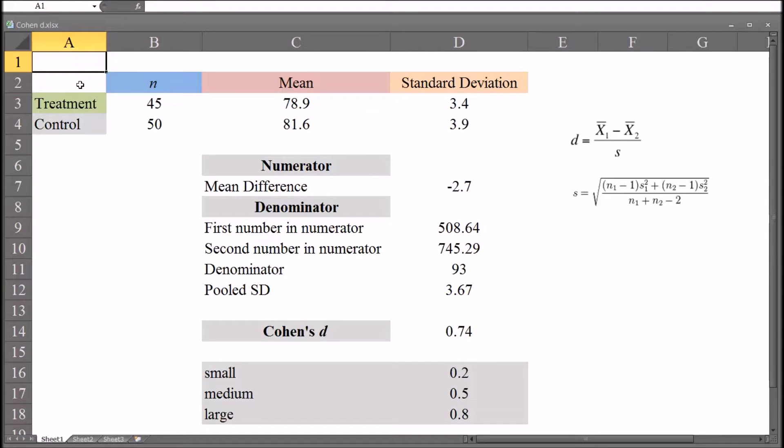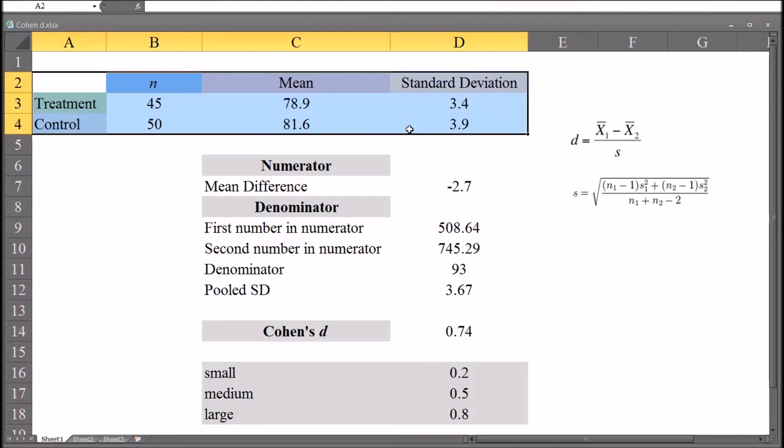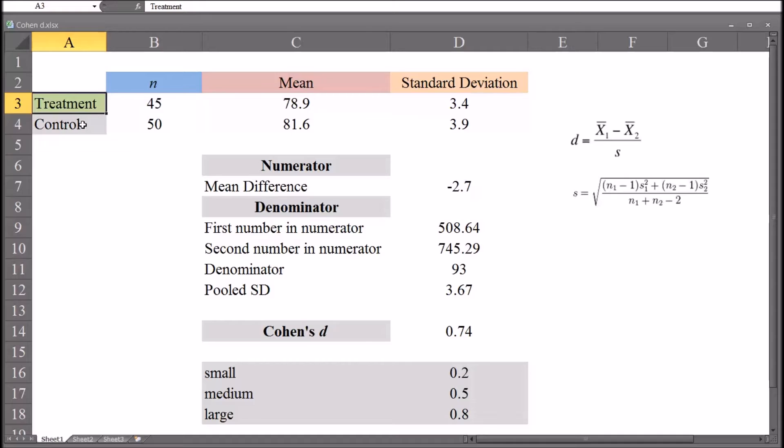So let's first start with the data. This is output which should be typical from SPSS for an independent samples t-test. In this example, let's say we have a treatment and a control. And let's assume the treatment is for participants who suffer from depressive symptoms.